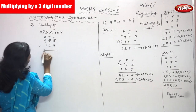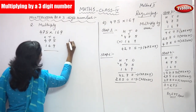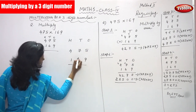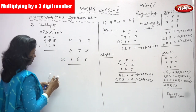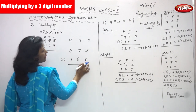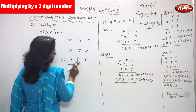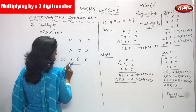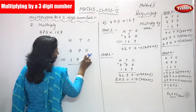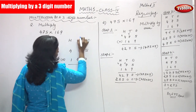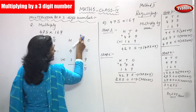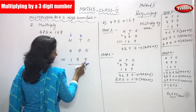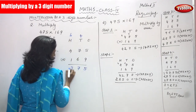Let's start: 475 into 169. First I am going to multiply by 9 — the 1's place value. The 1's place value is 9, the 10's place value is 6, and the 100's place value is 1. So 9 fives are 45 — write 5, carryover 4. And 9 sevens are 63; 63 plus 4 is 67 — write 7, carryover 6. Then 9 fours are 36; 36 plus 6 is 42. Done.